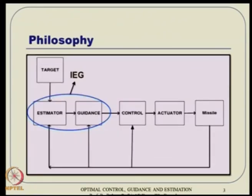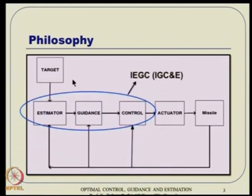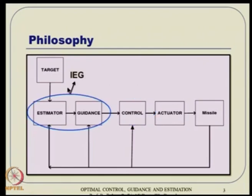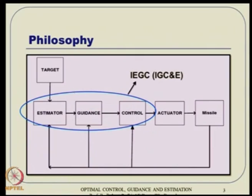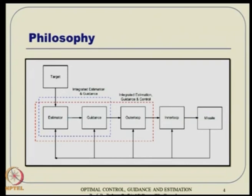The philosophy is that typically we do guidance and control. But if somebody wants to do estimation and guidance together, that leads to integrated estimation and guidance (IEG). If you put all three together, it is integrated estimation, guidance, and control — some people call it IGCE or IEGC. So the concept is either we talk about IG or IGC, and both will be covered in this lecture as an overview of our approach.